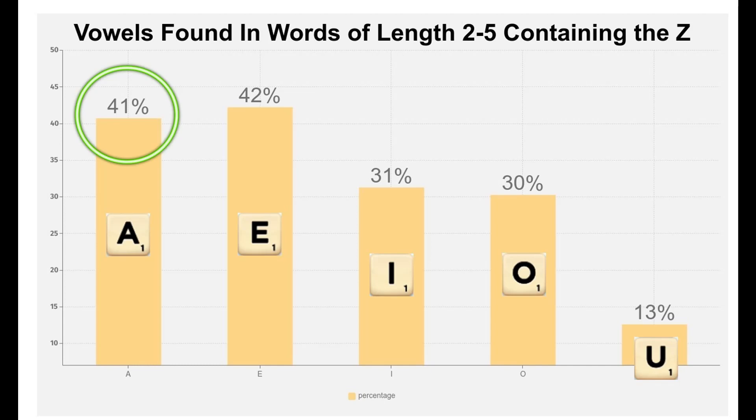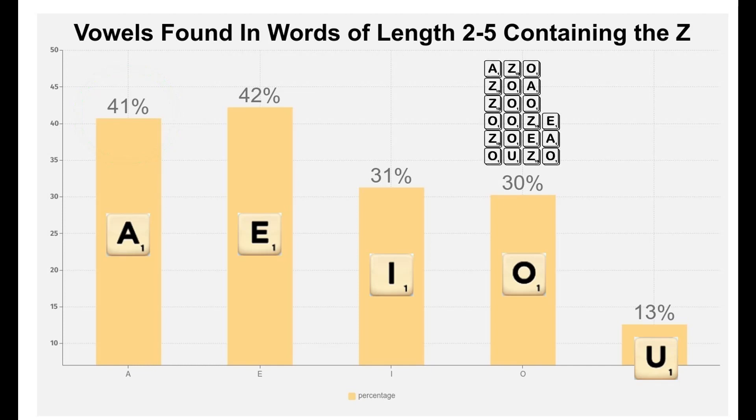There's also solid synergy with both the I and the O. The O pairs particularly well with the Z, thanks to several frequently seen Z words containing the O, where the Z is the only consonant, including zoa, azo, zoo, ooze, zoea, and oozo.